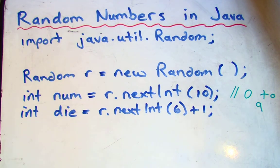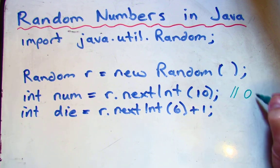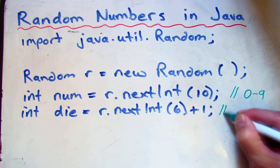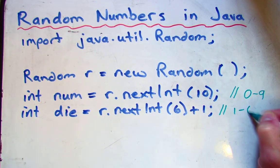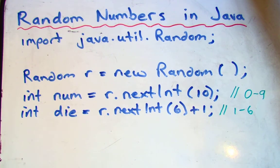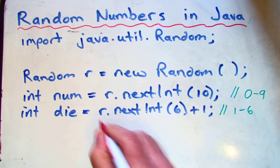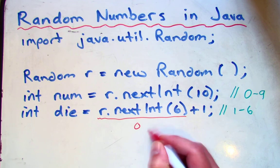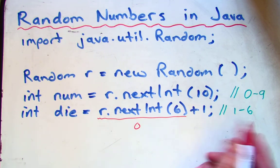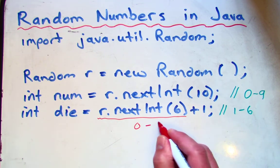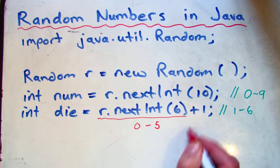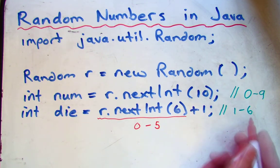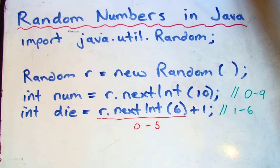And in this case, that would give me a number between 1 and 6. Because if this part of the expression, right here, if that was a 0 at the lowest, when I add 1, it's going to become a 1. If it was a 5, which would be the highest this could be, when I add 1, it would become 6. So by simply adding or subtracting something on the end, you can shift the range of numbers appropriately.